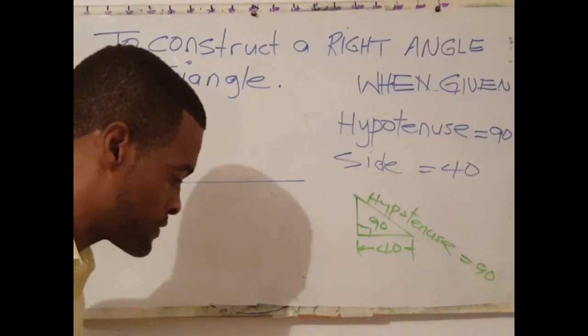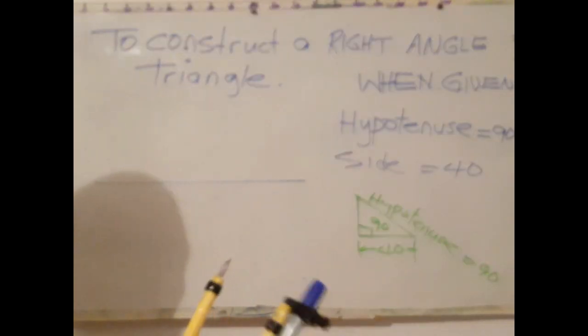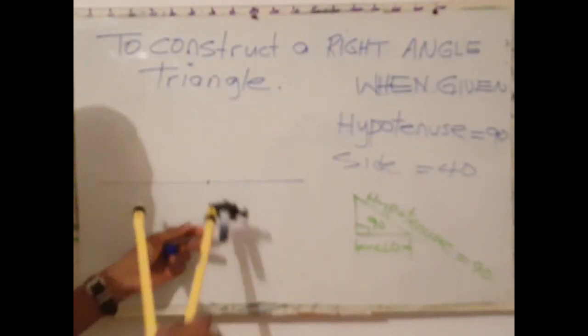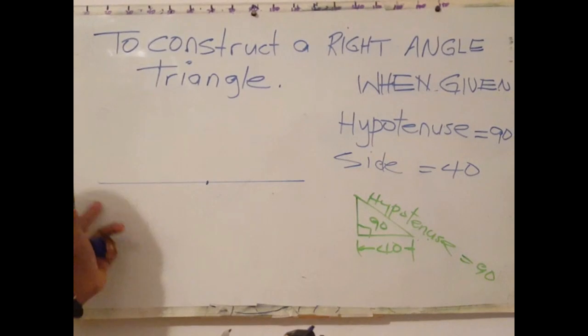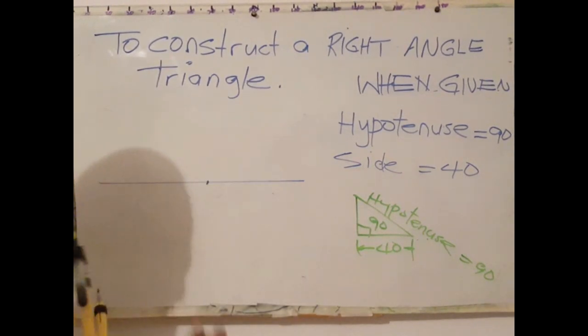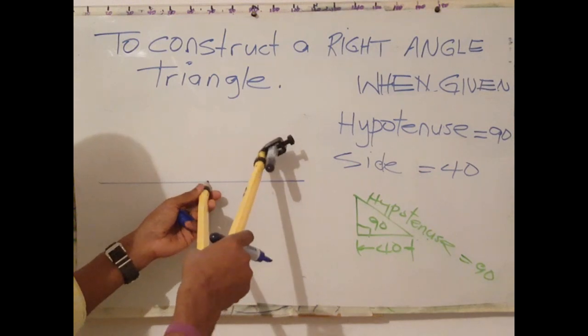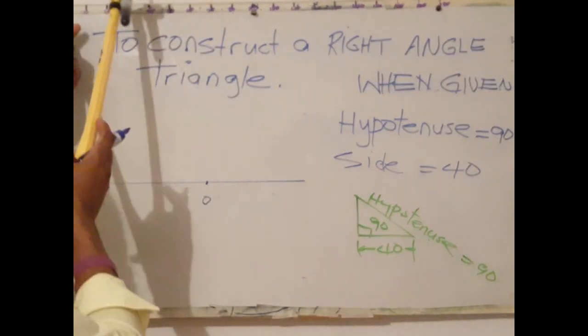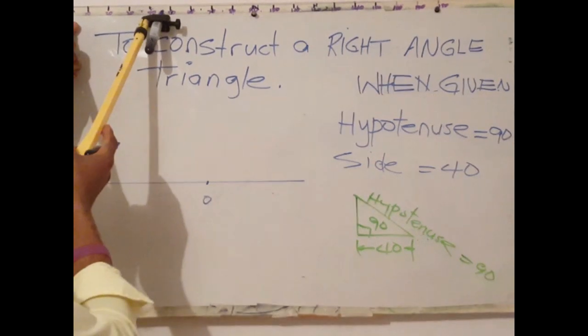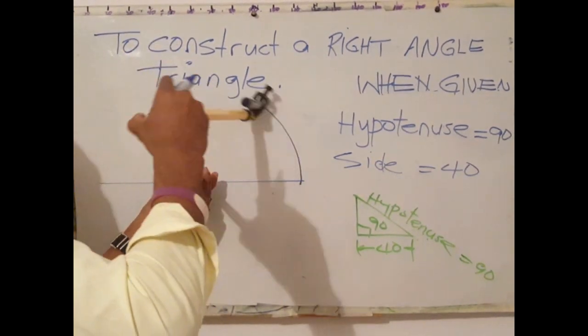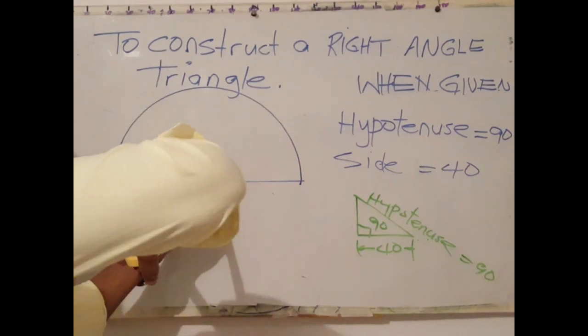Let's draw a random length line. Let's say here is my center. Next step is to draw a semicircle. With this point at the center, let me use this measurement. Let that be 45 millimeters.